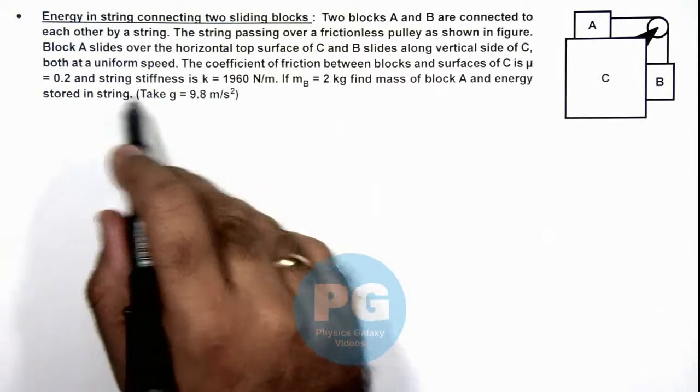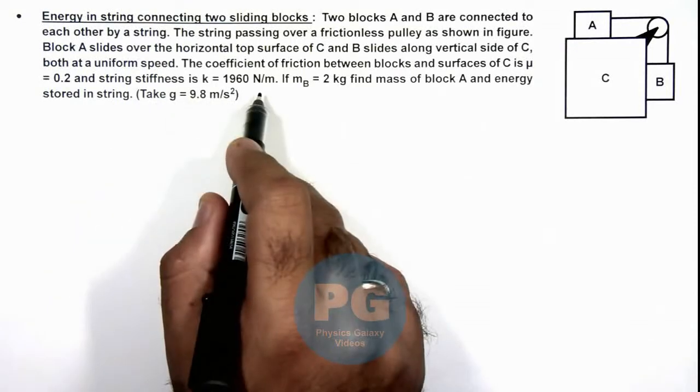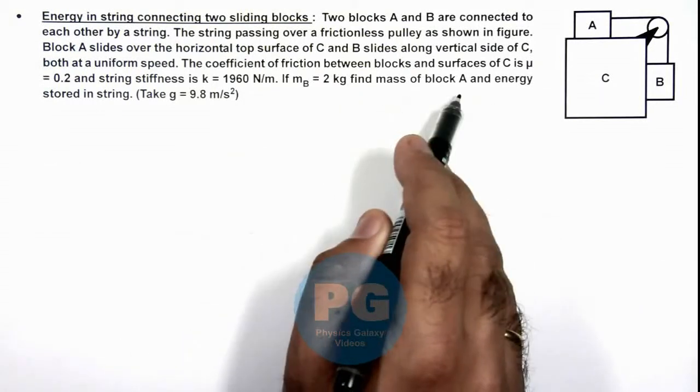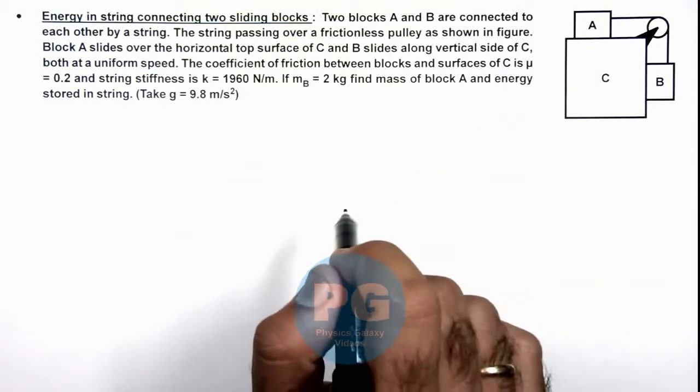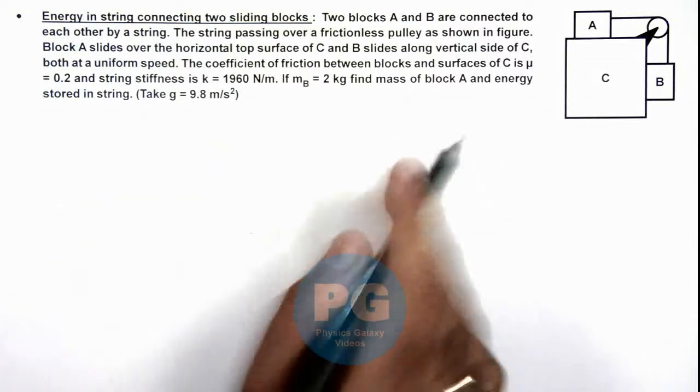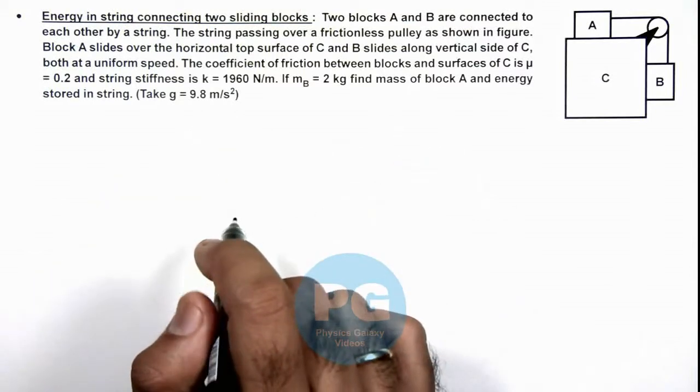The string stiffness is also given to us. If mass of block B is 2 kilograms, we are required to find the mass of block A and energy stored in the spring. We are also given to take the value of g as 9.8 meters per second squared.